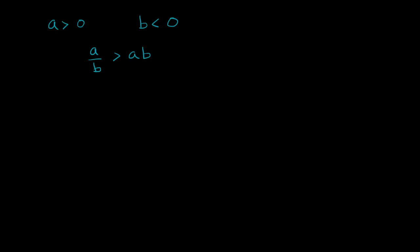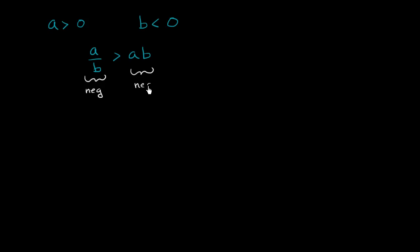So let's think about this a little bit. The first thing: we know that a is positive and b is negative. So if I take a positive divided by a negative, what am I going to get? A positive divided by a negative is going to be a negative. What happens if I take a positive times a negative? a times b is also going to be a negative — a positive times a negative is also a negative.